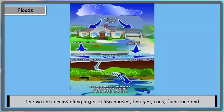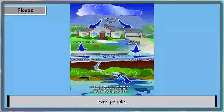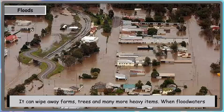The water carries along objects like houses, bridges, cars, furniture, and even people. It can wipe away farms, trees, and many more heavy items.